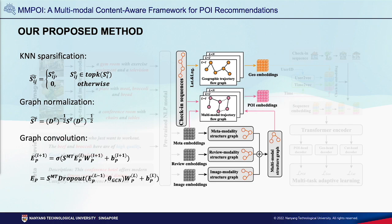To address the second challenge of considerable noise intruding from multimodal content, we establish modal-specific similarity structure graphs to model the latent semantic correlation of POI, and adopt the KNN sparsification method to filter out the important relationships. This strategy effectively mitigates the impact of multimodal noise on the accuracy of recommendations.